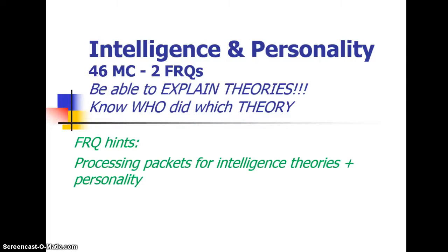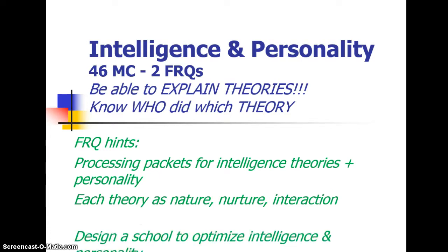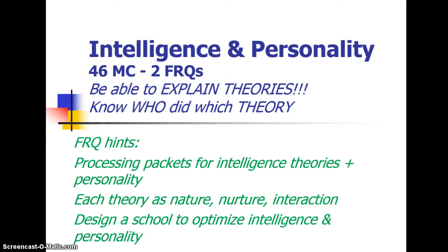A few FRQ hints to start off with. We did our processing packets for both intelligence and personality — look back at those. Is each theory on the nature side, nurture side, or is it an interaction between the two? And if you could design a school for optimum intelligence or personality development, how would you apply each of these concepts?